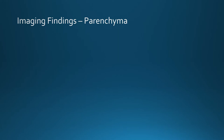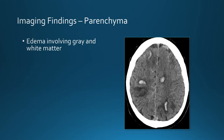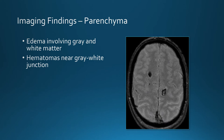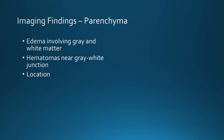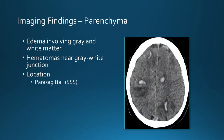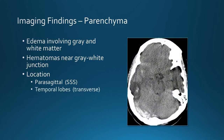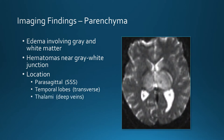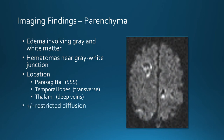Imaging findings in the brain parenchyma include edema involving gray and white matter, and hematomas near the gray-white junction. The location depends on which sinus is involved — sagittal sinus involvement causes parasagittal findings, transverse sinus most frequently involves the temporal lobes, and deep venous system involvement often causes abnormalities in the thalami. There may or may not be restricted diffusion, which differs from arterial infarction that almost always shows restricted diffusion. In venous infarction there is a mixture of infarction and interstitial edema — the interstitial edema is extracellular and causes increased diffusion, while infarction itself causes restricted diffusion, so findings are mixed.